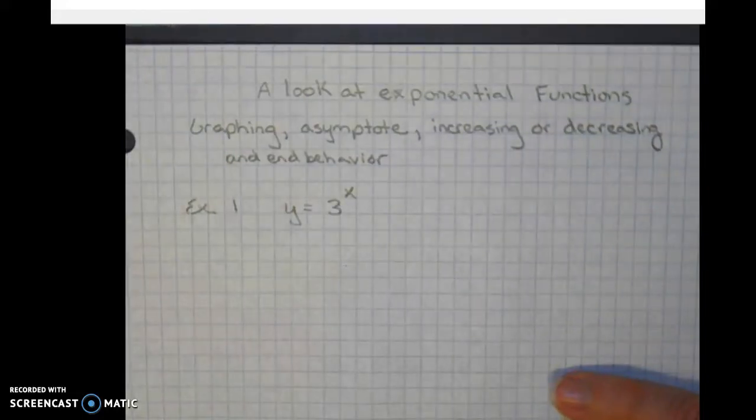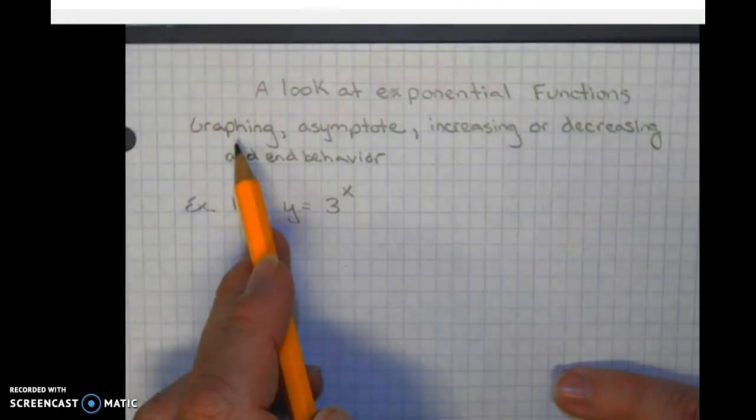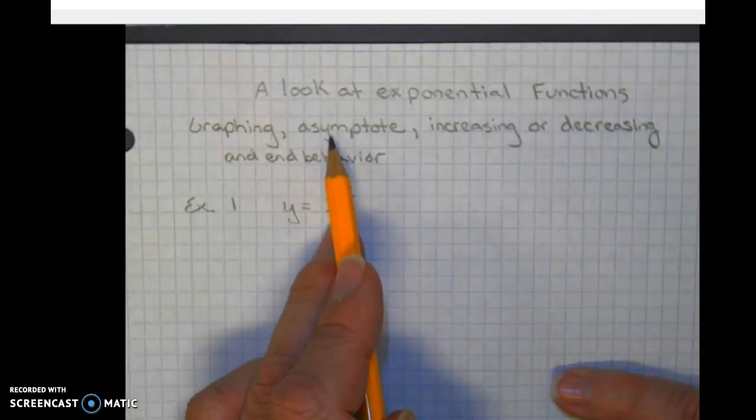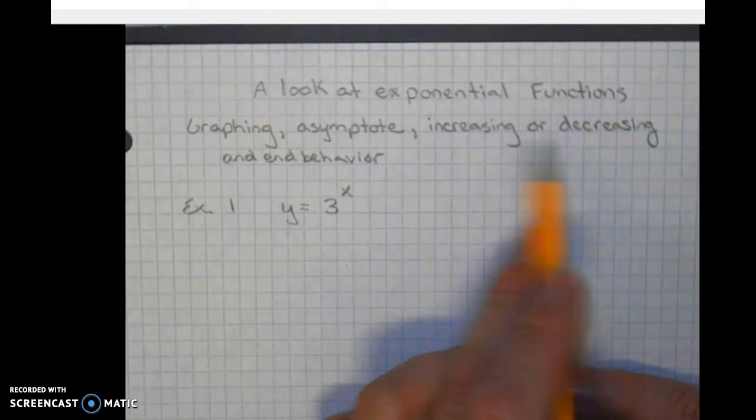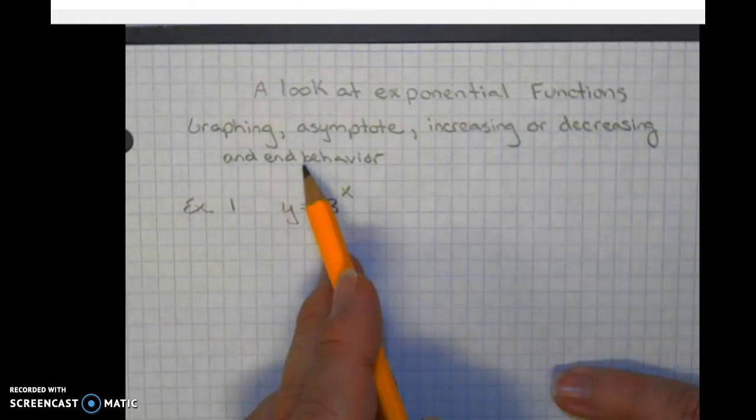Hey class. Tonight we're going to look at graphing exponential functions. And in order to graph an exponential function, we need to know where the asymptote is located, we need to know if the graph is going to be increasing or decreasing, and we need to know the end behavior.